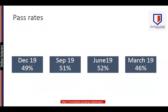As far as previous pass rates are concerned, in December 2019 there was a 49% pass rate, in September 2019 it was 51%, in June it was 52%, and in March it was 46%. So the average result is around 47–48%, which is not a bad result for a fundamental paper.